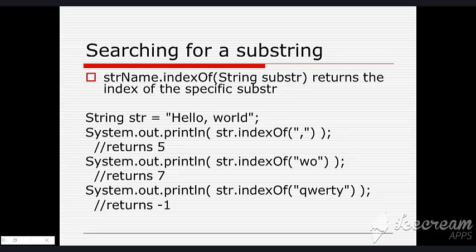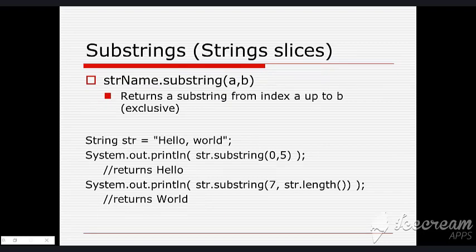str.indexOf("wo") - it means wo starts from which index. So it returns 7, which means the wo is on index 7. In the last example, we have just pointed out the q. If you look, there is no q in the string, so it returns minus one, which means not found.